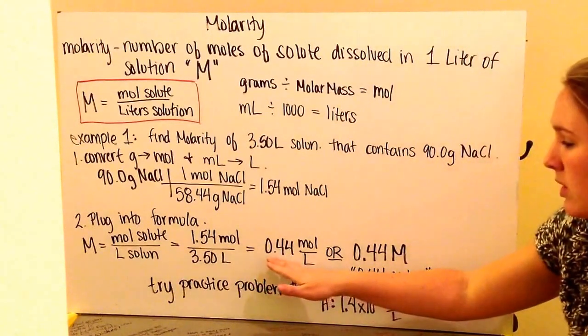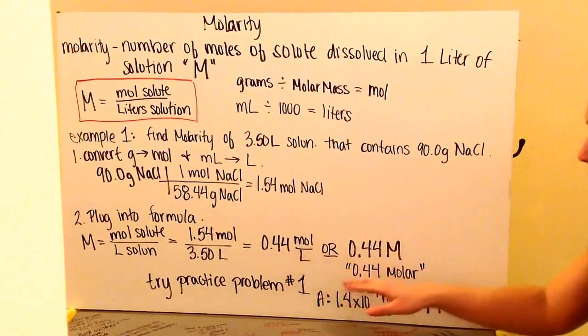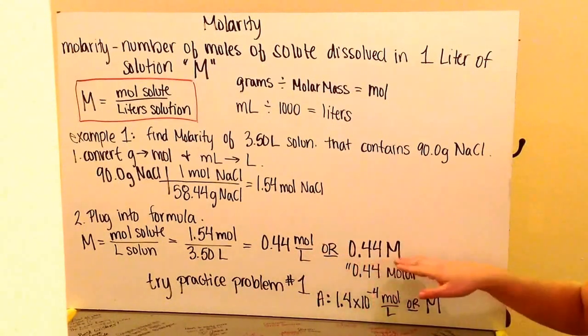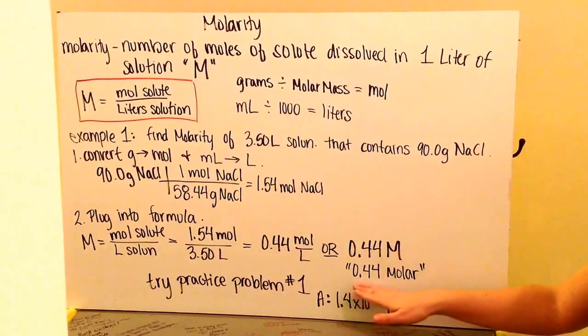This gives me a total of 0.44 moles per liter. Those are my units for molarity. Or I can write 0.44M, capital M, which I would read as 0.44 molar.